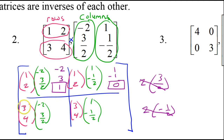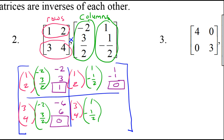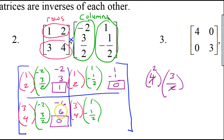Multiplying across here, I get negative 6; multiplying these, I get positive 6. That gives me 0. When I multiplied 4 times 3-halves, I remembered that 2 goes into 4 twice, and then 2 times 3 is 6. Multiplying these: 3 times 1 is 3; 4 times negative 1-half — half of 4 is 2, so this is negative 2. Add them up, I get 1.